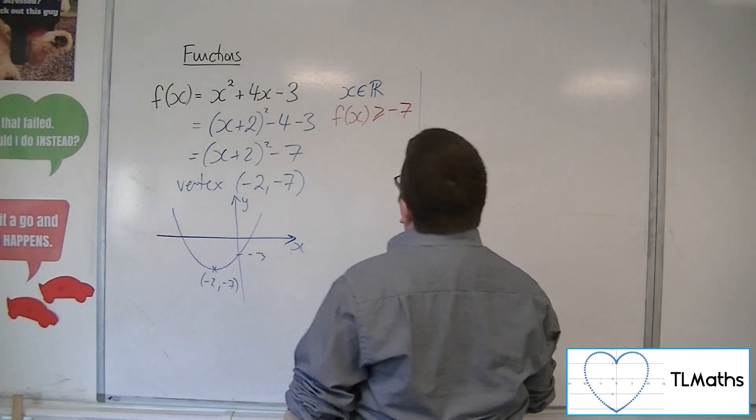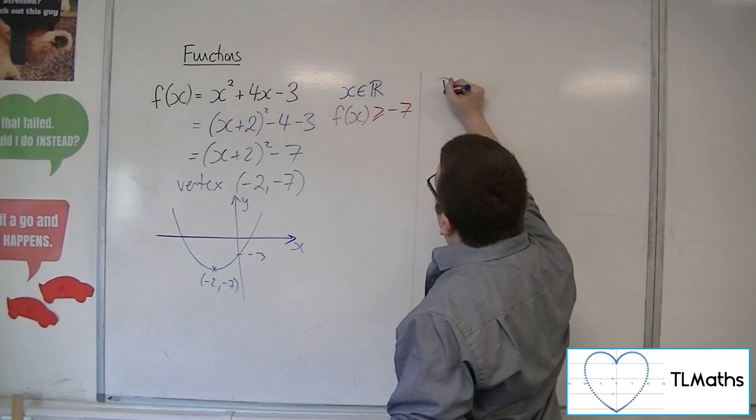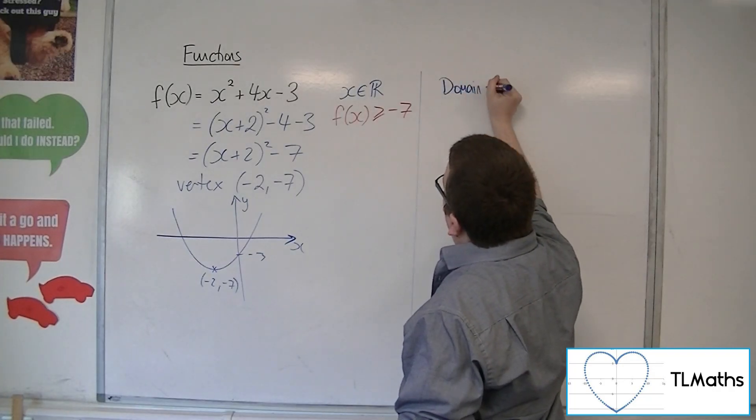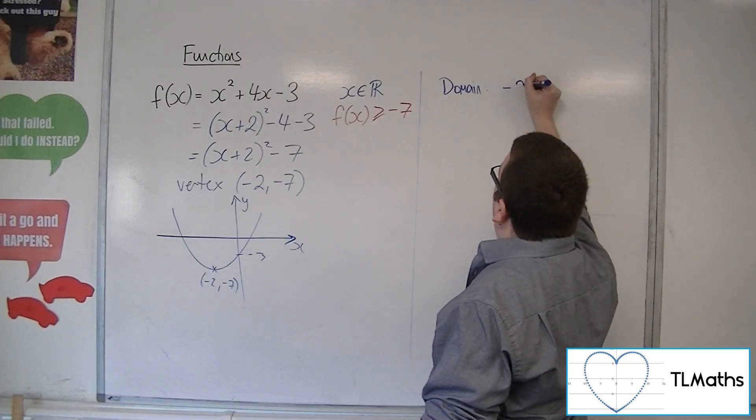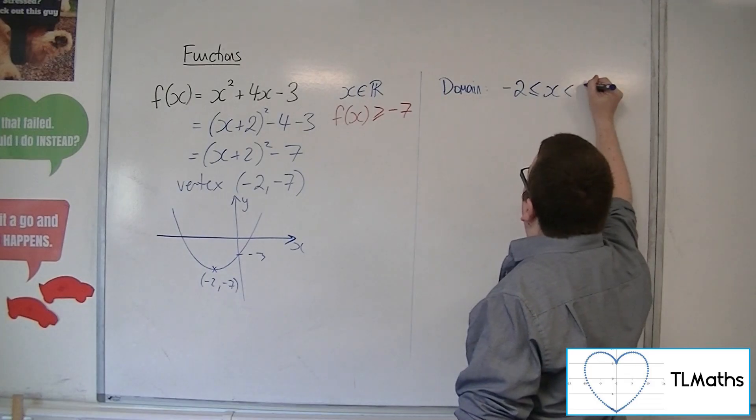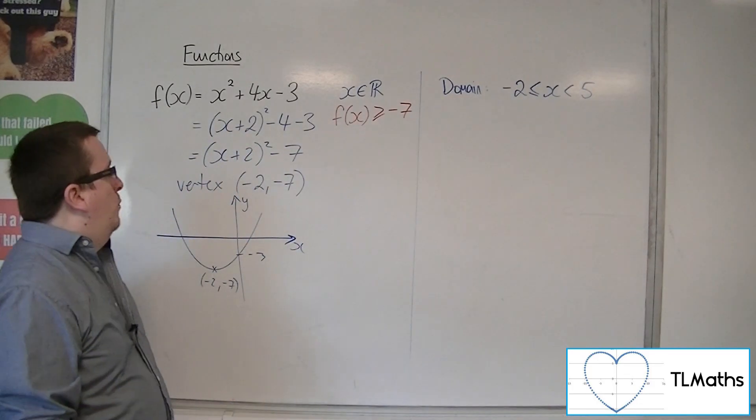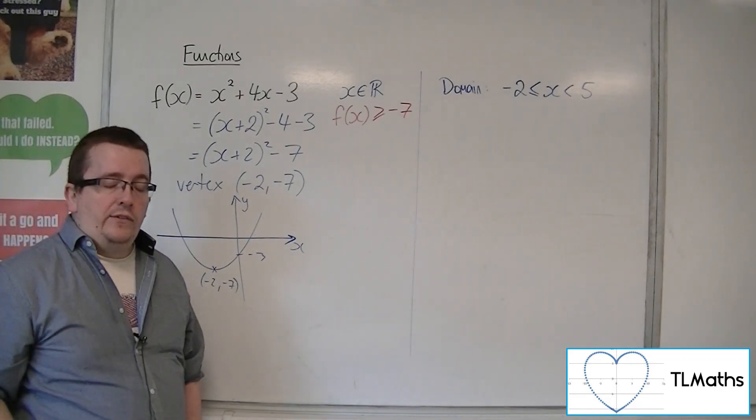I could say, I want the domain to be -2 ≤ x < 5, for example. And then I might want to find out, what is the range in this case?